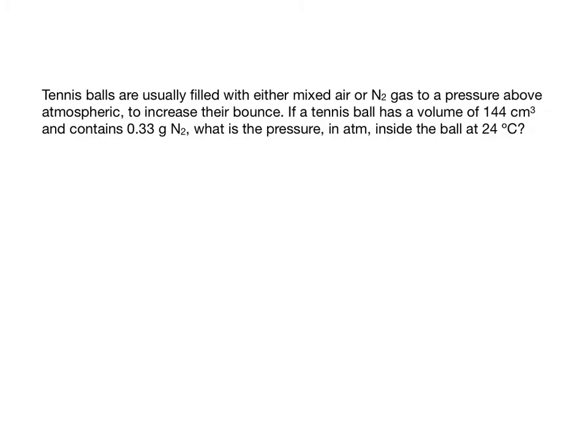In one example, tennis balls are usually filled with mixed air or nitrogen gas to a pressure above atmospheric to increase their bounce. If a tennis ball has a volume of 144 cubic centimeters and contains 0.33 grams of nitrogen gas, what is the pressure in atmospheres inside the ball at 24 degrees Celsius? We are going to use the equation PV equals NRT.